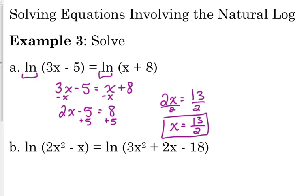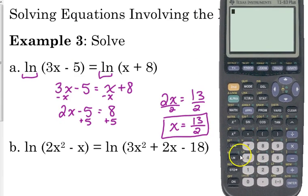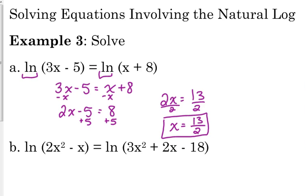It's very easy to check this, especially with the natural log, because you don't have to worry about changing the base. Just the log of 3 times 13 over 2 minus 5, and make sure that the log of 13 over 2 plus 8 gives us the same value. And it does, so we're good. So 13 over 2 is the solution.